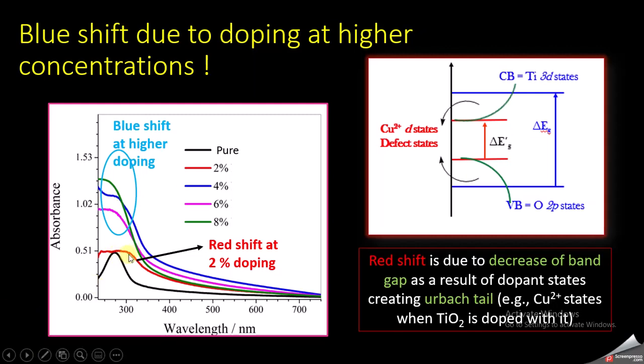You can easily see that this peak is shifted towards the higher wavelength side, and this is called a red shift, which is occurring at 2% doping. This red shift is basically because of a decrease in the band gap of the material, which I have already explained in another video.